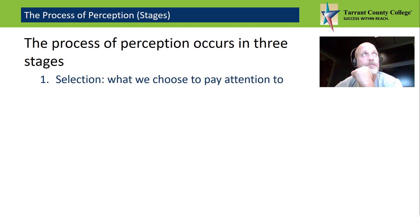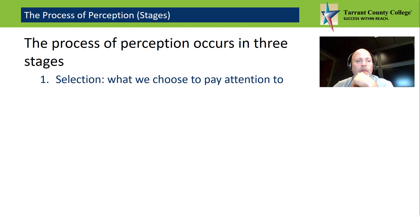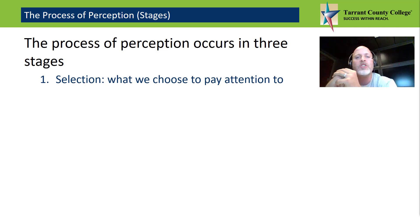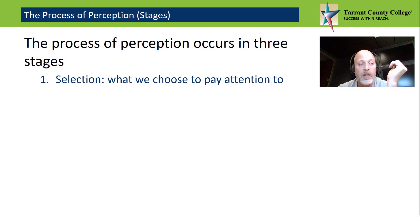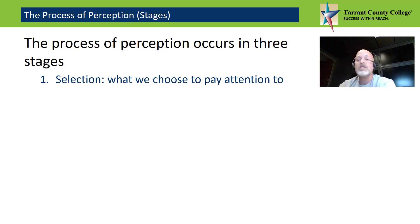Now let's look at each one of these in order. Selection — what we choose to pay attention to. The process of perception begins when one or more of our senses is stimulated. You pass a construction site and you hear two people talking about the foundation they're pouring. You see one of your classmates smile at you. Maybe a coworker bumps into you. Rather than paying attention to all the stimuli in your environment, what you're doing is you engage in selection — the process in which your mind and body help you choose only certain stimuli to attend to.